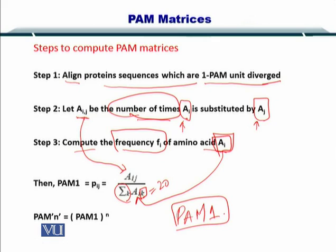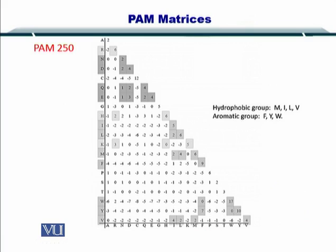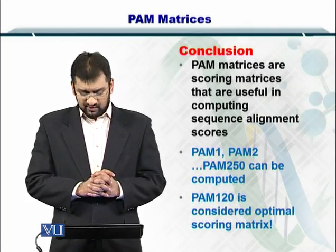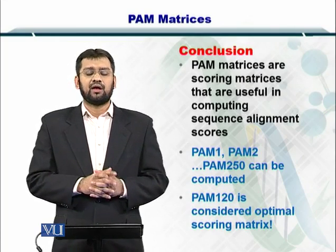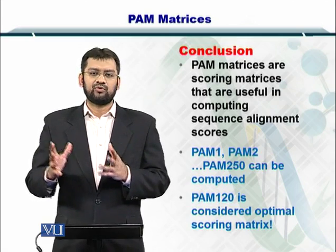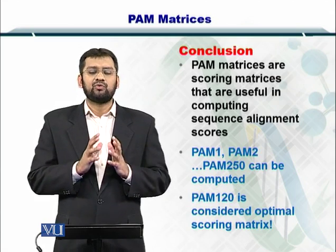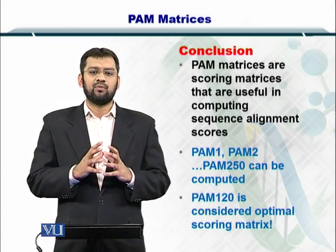If you want to use PAM2, you simply square PAM1. Similarly, for PAM N, you multiply PAM1 by itself N times. This is what you get when you multiply PAM1 by itself 250 times — a substitution matrix. In conclusion, PAM matrices are scoring matrices useful for comparing and scoring protein sequences. You can compute PAM1, PAM2, and so on up to PAM250 and beyond. PAM120 is considered the best choice for comparing similar protein sequences.